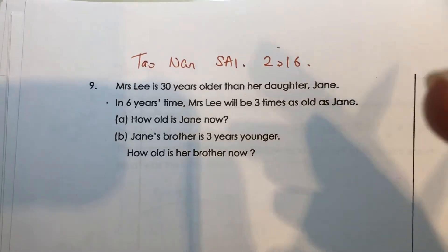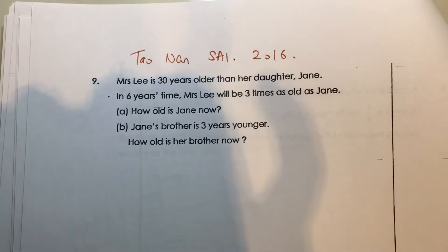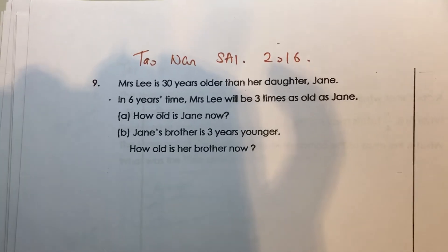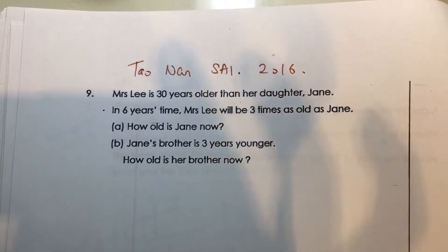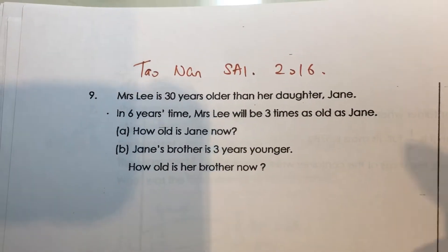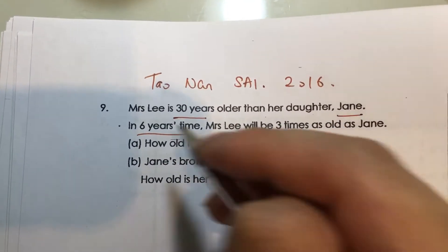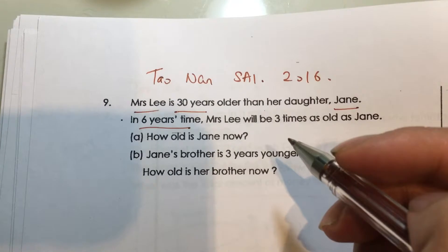Okay, in this question, you can see this is actually about age. Mrs. Lee is 30 years older than her daughter Jane, and in 6 years time - let me underline all those keywords and numbers.